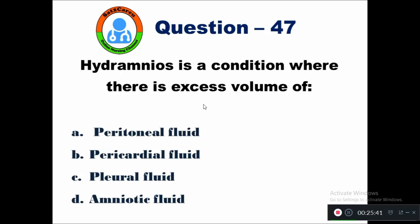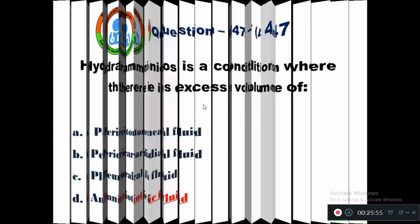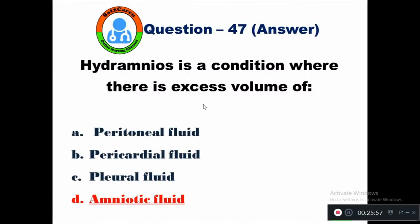Question 47: Hydramnios is a condition where there is excess volume of — option A peritoneal fluid, B pericardial fluid, C pleural fluid, D amniotic fluid. Hydramnios is a condition in which there will be excess volume of amniotic fluid.